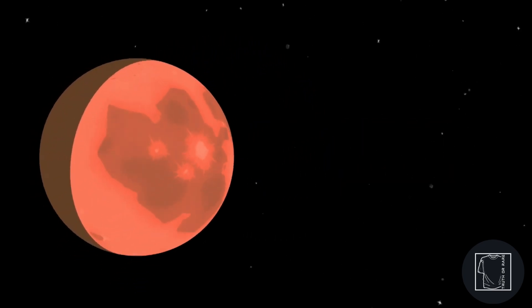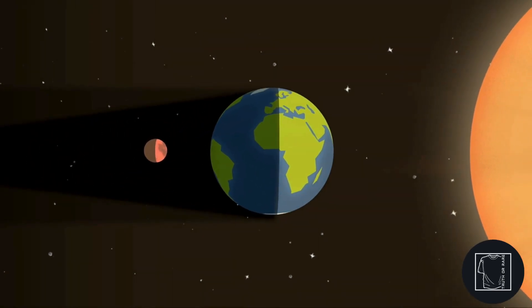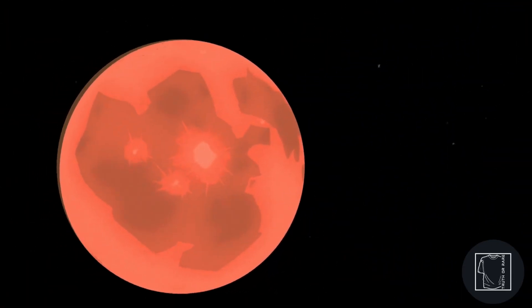A lunar eclipse, on the other hand, is where the moon moves behind the Earth, so it's now the Earth blocking the Sun's light on the moon, creating a shadow on it with a red tint.